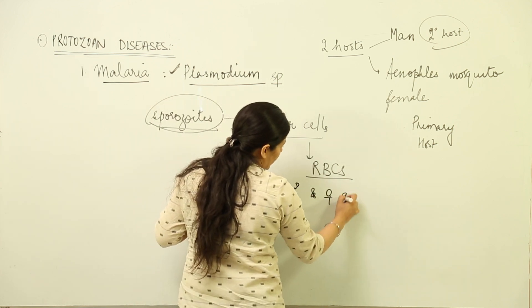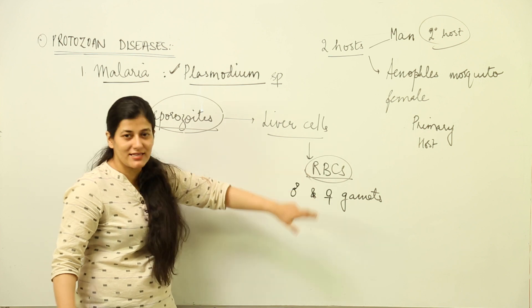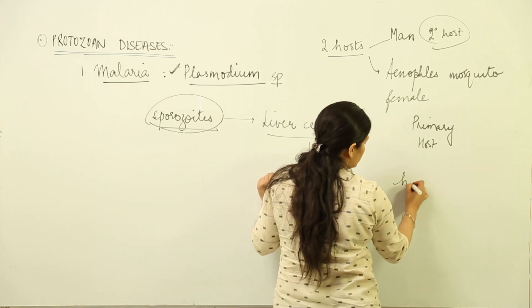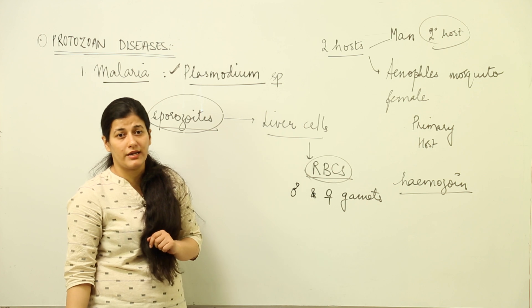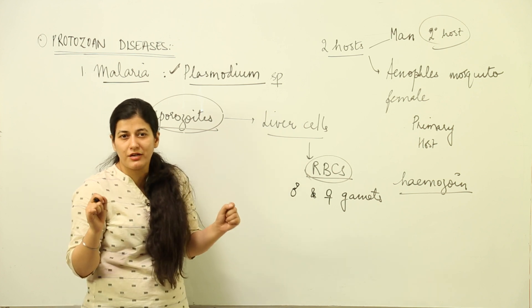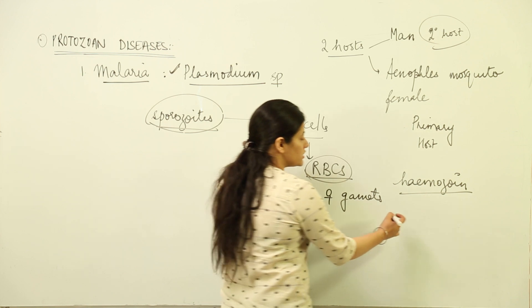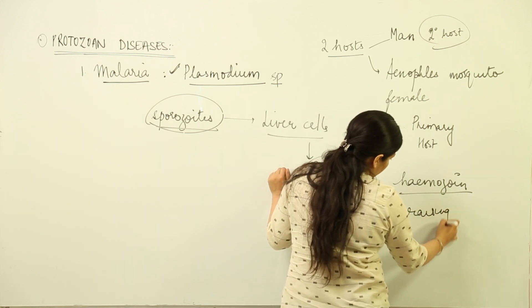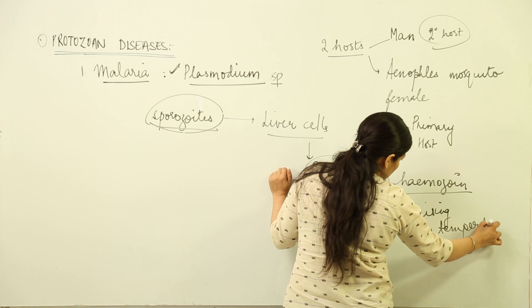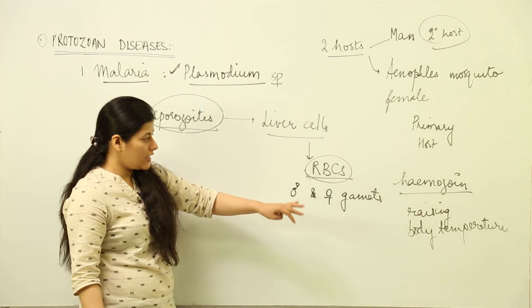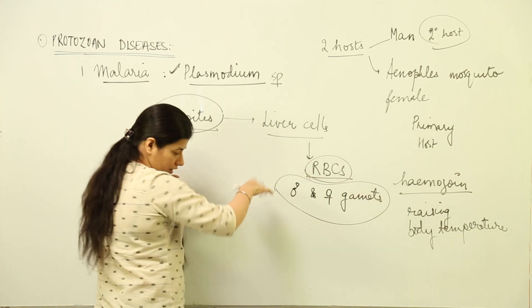These RBCs become the site for formation of male and female gametes produced inside them. These RBCs burst down and release a chemical known as hemozoin. That is why people suffering from malaria have extreme feverish chills—they feel very cold. This is because whenever RBCs rupture, they release hemozoin, which is responsible for raising body temperature. After a bout period, they suffer feverish chills.